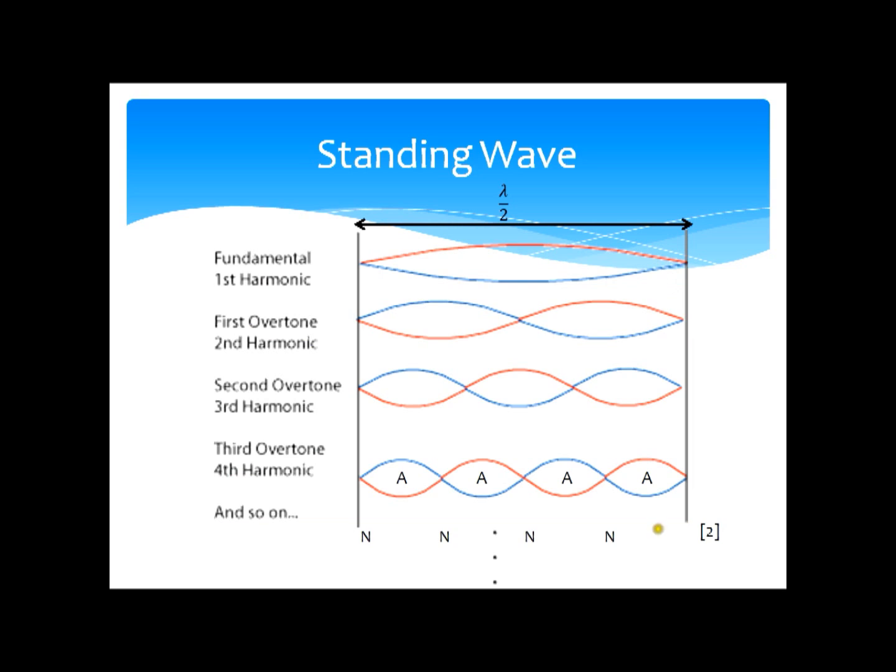An easy way to visualise a standing wave is to imagine waves upon a string. If we fix two ends of a string and then pluck the middle and allow it to oscillate freely, then the part in the middle forms an anti-node and the two fixed ends create nodes, no possible movement, while anti-nodes show an area of maximum amplitude.